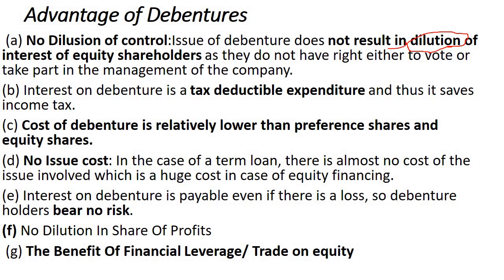Since interest on debentures is payable even if there is a loss, debenture holders bear no risk. They will receive their interest regardless of whether the organization makes a profit or a loss, as the organization is obligated to pay both the interest and the principal amount to the debenture holders.